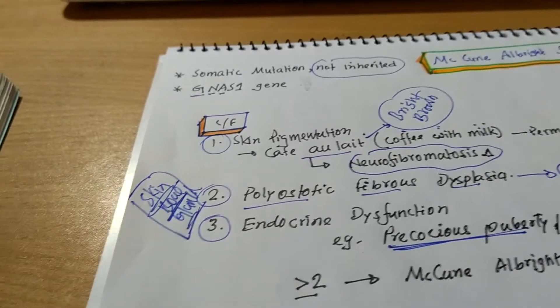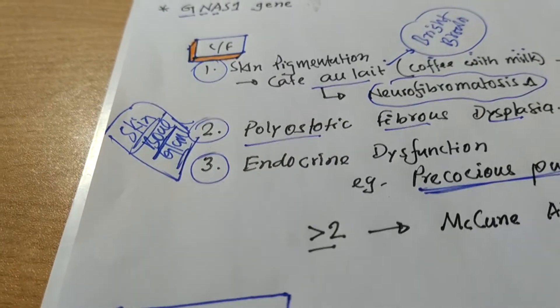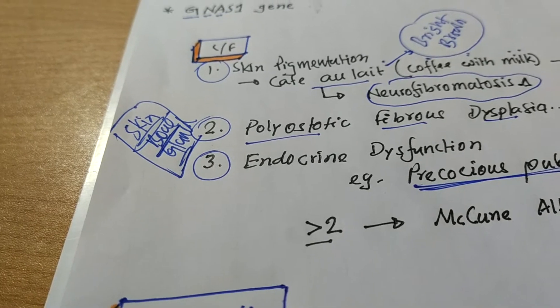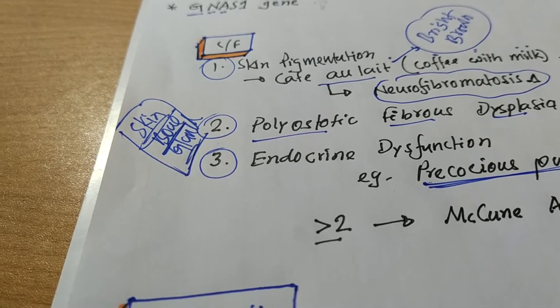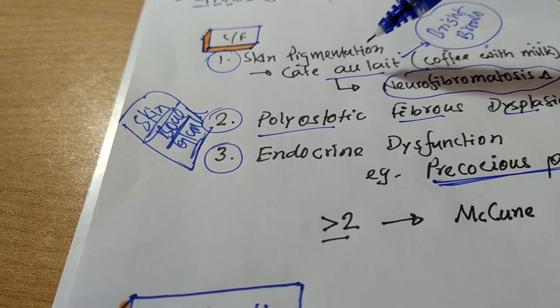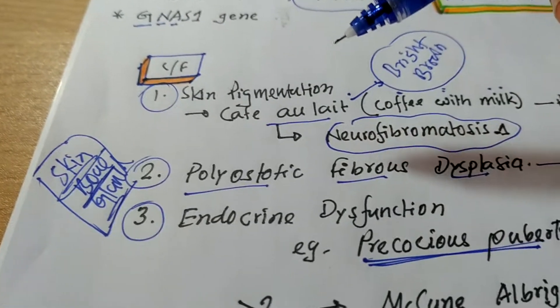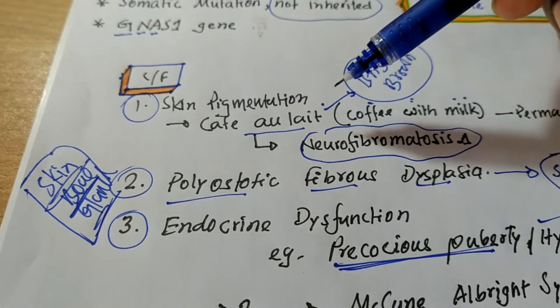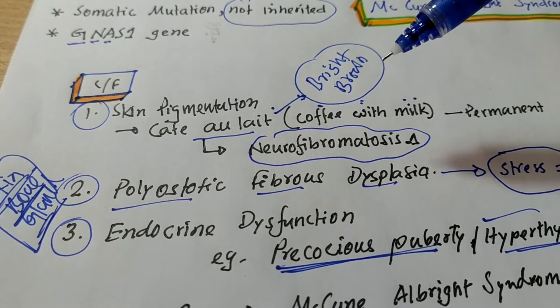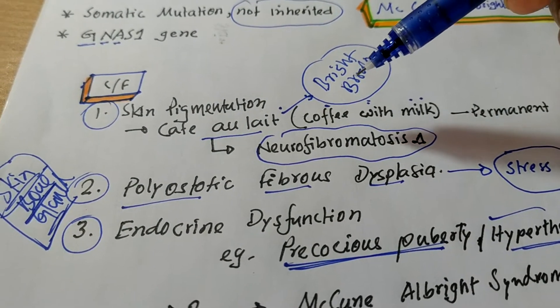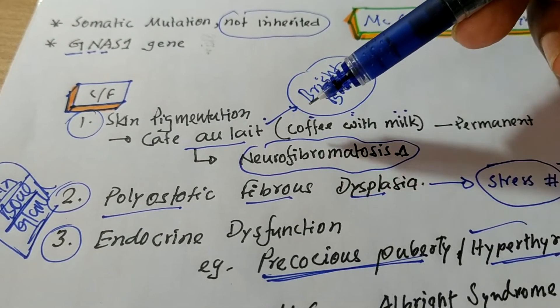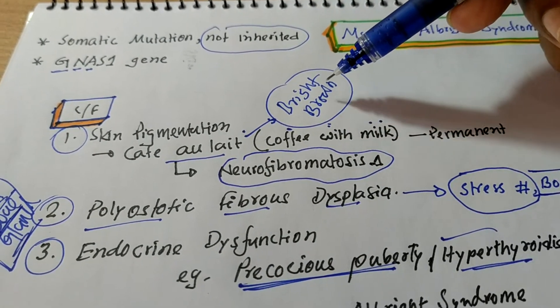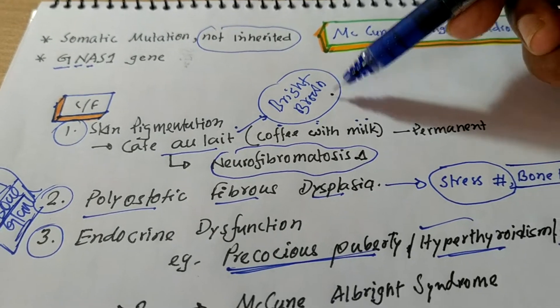Now, the question is, what are the clinical manifestations of McCune-Albright syndrome? At first, the most important clinical manifestation is skin pigmentation. And this skin pigmentation is called cafe-au-lait. Cafe-au-lait type of pigmentation. It is a French term. The meaning of cafe-au-lait is coffee with milk. That is, it is a bright brown type of pigmentation, macules.